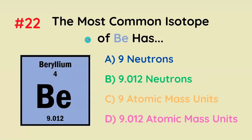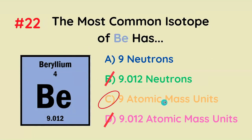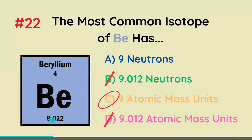The most common isotope of beryllium has what? The correct answer is nine atomic mass units. We have to have a whole number, and atomic mass units is what is being measured with this number.